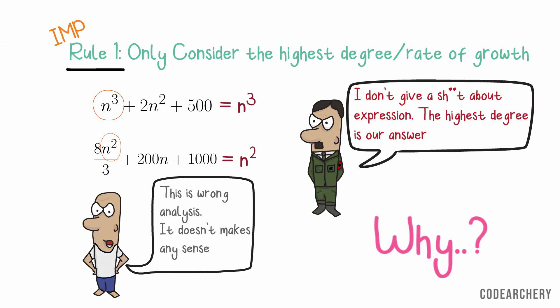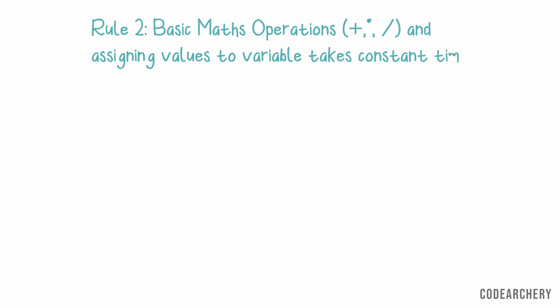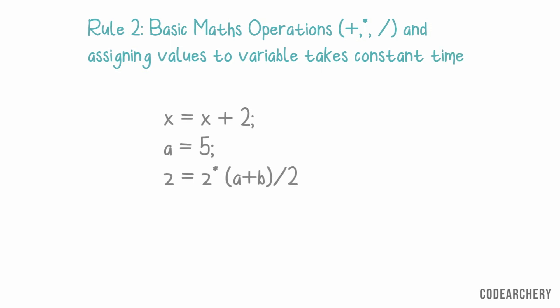Now, let's move forward to rule number 2. All the basic mathematical operations such as addition, multiplication or division or even assigning value to variable takes constant time. Because in detail, they are just changing the values in registers. Which depends on machine performance. So, we consider all these operations takes constant time.